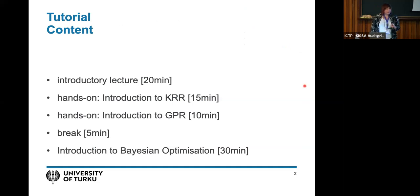We have a little over an hour. We'll discuss a few introductory slides summarizing Matthias's lecture from yesterday, then do two different notebooks: one on how kernel ridge is implemented in practice, and one on Gaussian process regression. We can take a short break if needed, then move on to active learning with GPR and how Gaussian processes can be exploited to curate datasets and optimize materials properties.